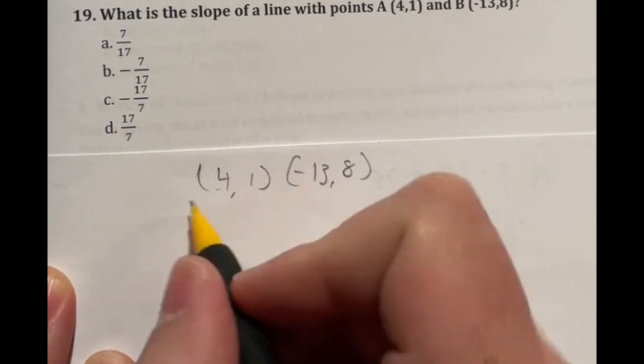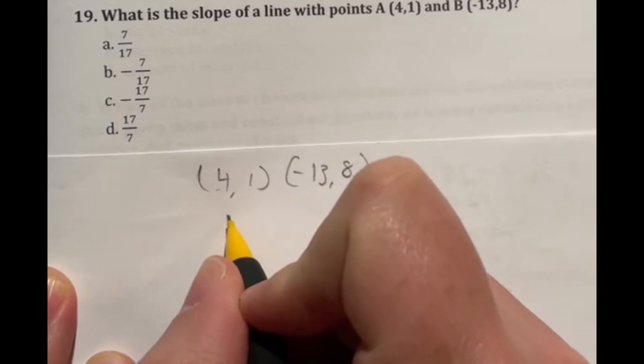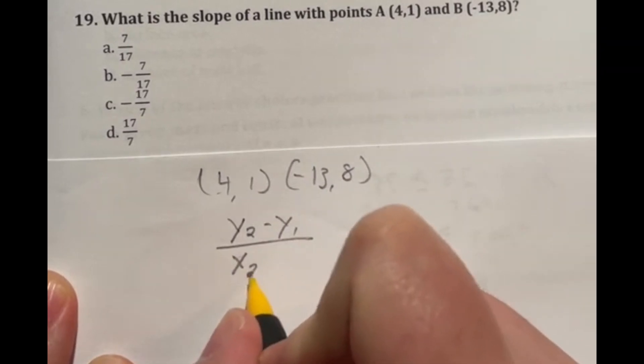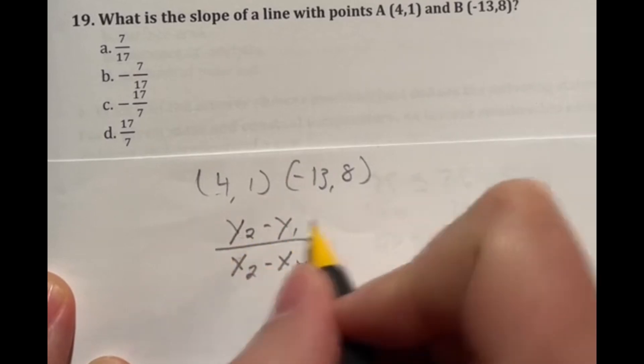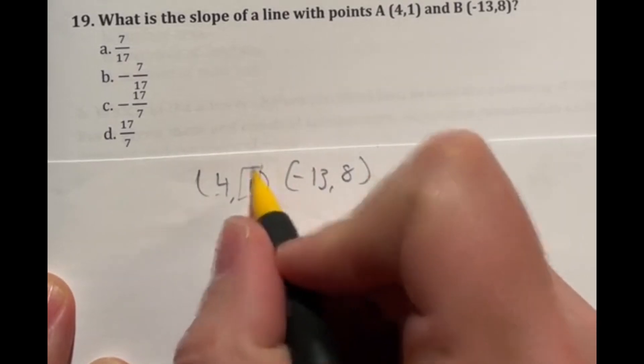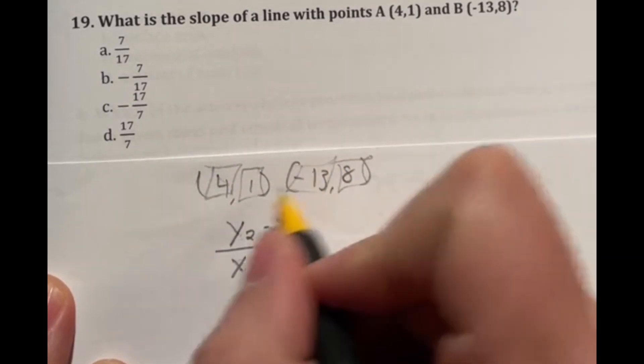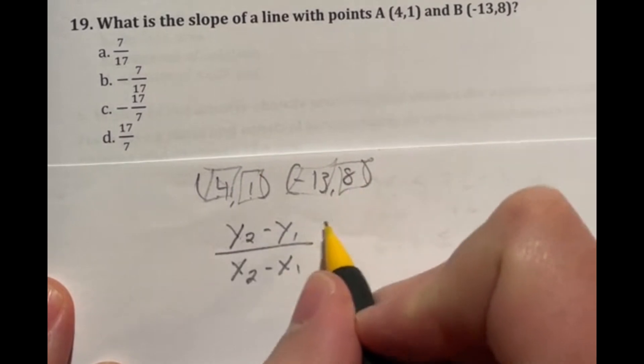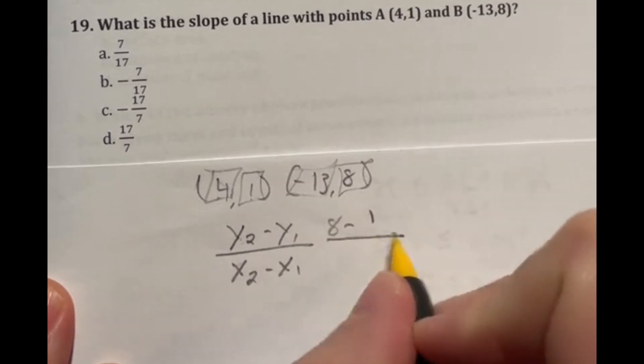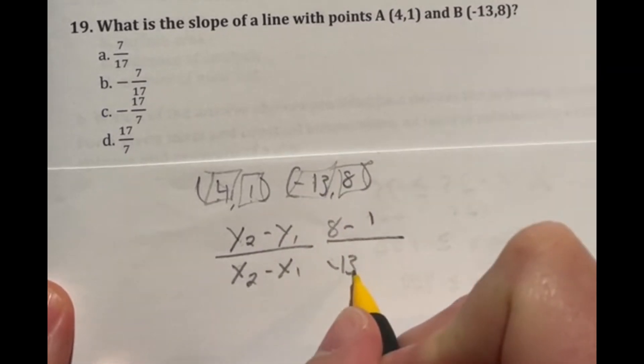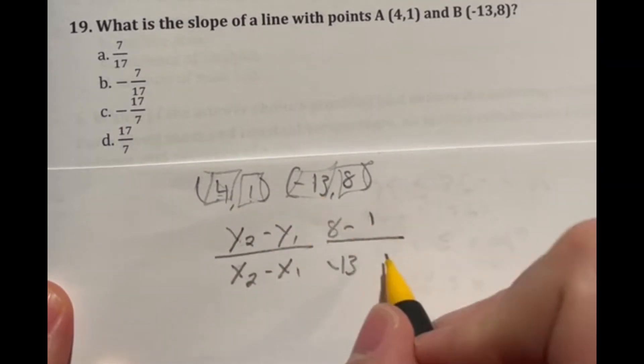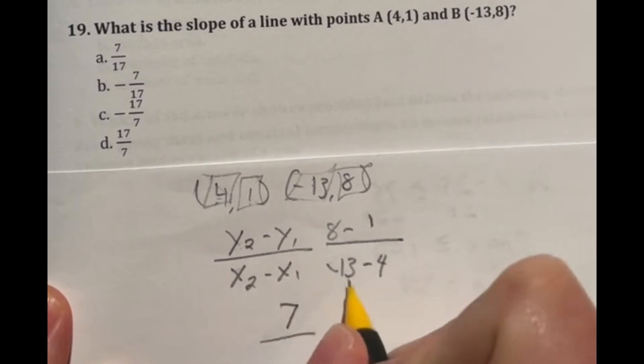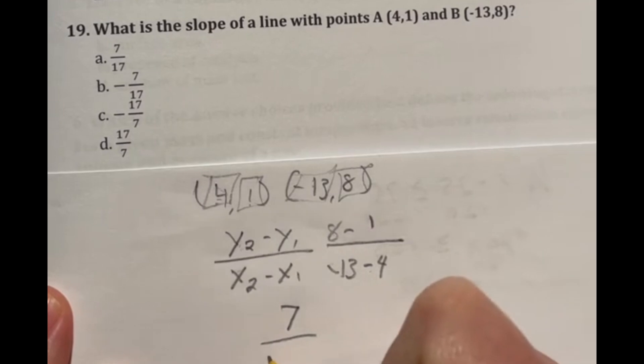There's another formula for slope that is your rise over run formula. And it's when you do your second y value minus the first value, divided by your second x value minus your first one. So the second number is your y value, the first number is your x value. In other words, this is the x axis and the y axis number. So our y2 would be eight, minus our y1 would be one. Over, we have negative 13 for our x2 and we have four for our x1. So if I simplify this out, we're going to do eight minus one, which is seven, divided by negative 13 minus four, which is going to give us negative 17.